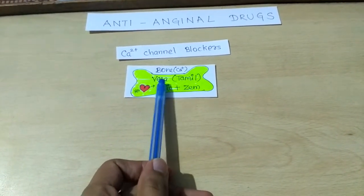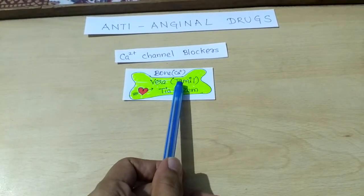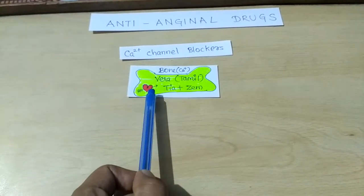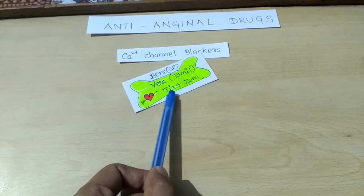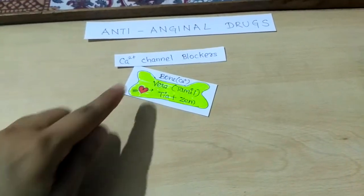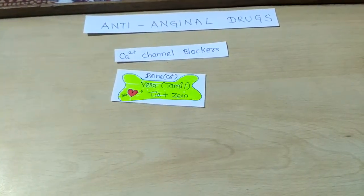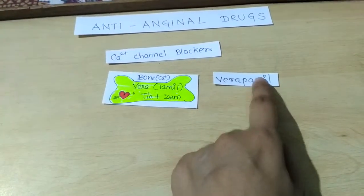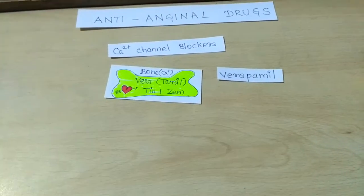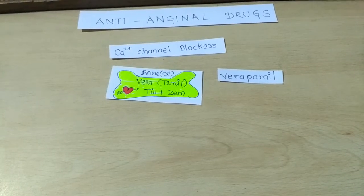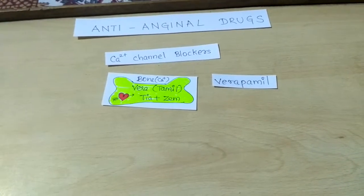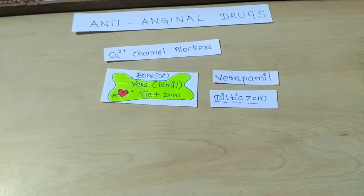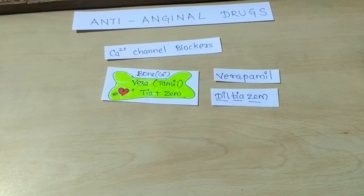...there is 'Vera' written on it in Tamil language, and also somebody has drawn a heart and written their name 'Tia plus Zem'. So 'Vera' written in Tamil will give us Verapamil, and a dil or a heart with 'Tia plus Zem' will give us Diltiazem. So these are the calcium channel blockers.